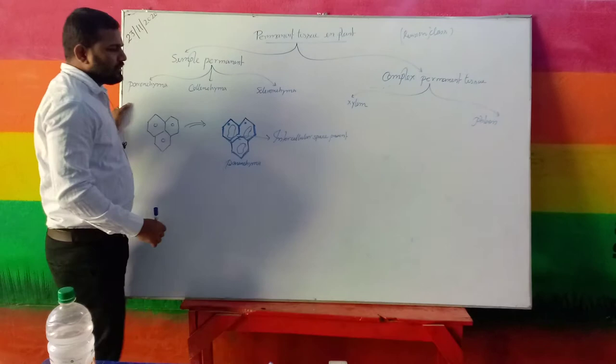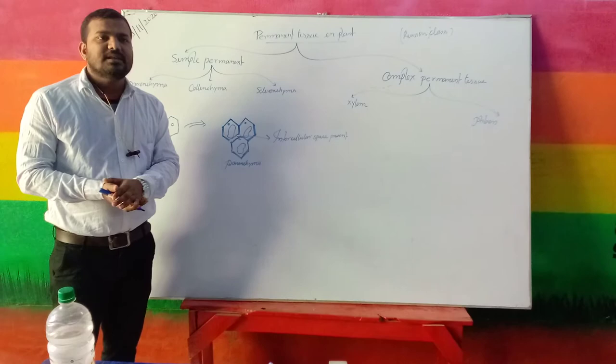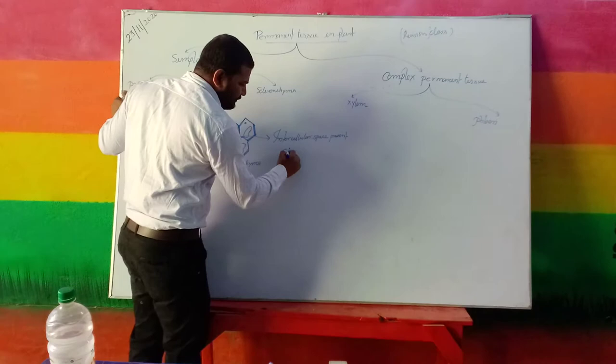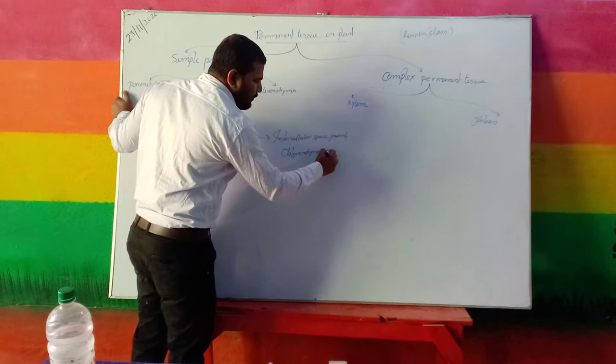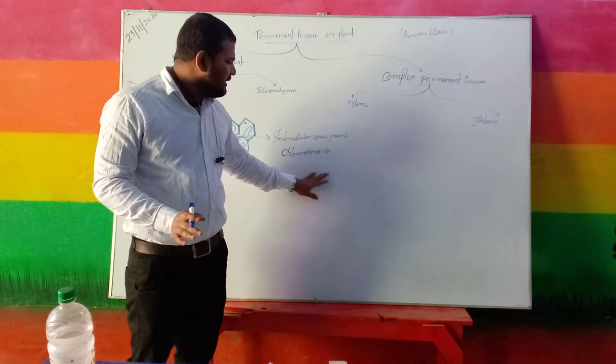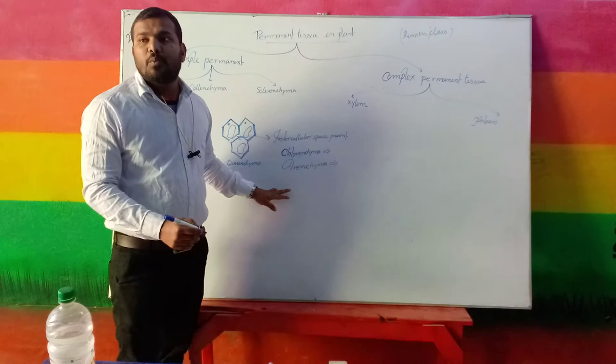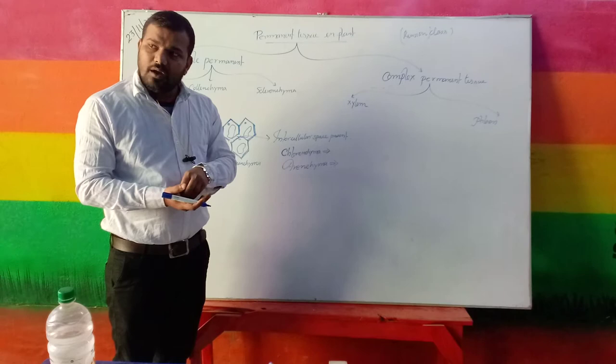Different types of parenchyma are present in plants. For example, some parenchyma tissue contains chloroplasts — the green pigment-containing organelles — and they are termed chlorenchyma. The green portions of the plant have this specialised parenchyma cell that helps perform photosynthesis. Some parenchyma can store air; they are termed aerenchyma, present in some aquatic plants, providing buoyancy capacity for floating on water.